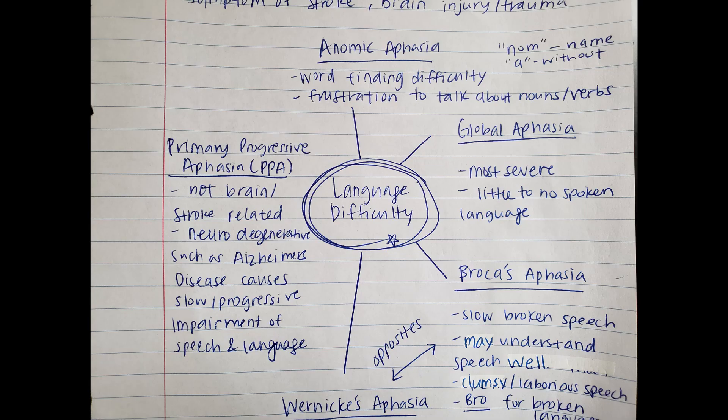Last but not least, I'm going to cover primary progressive aphasia, or PPA. I saw this on the aphasia website, which I'll link below, and wanted to include it even though it's not necessarily stroke-related. This one is not brain injury or stroke related, but it is neurodegenerative. For someone who has Alzheimer's disease, PPA is something they can have that causes a slow but progressive impairment of speech and language.